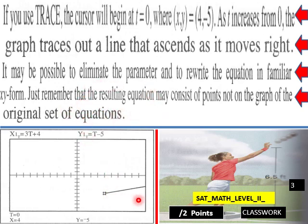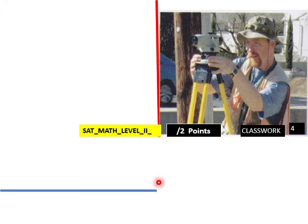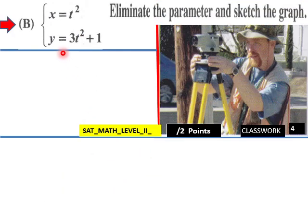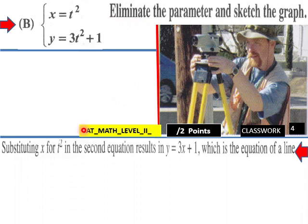Example B: we have X equals t squared and Y equals 3t squared plus 1. Eliminate the parameter and sketch the graph. Substituting X for t squared in the second equation results in Y equals 3X plus 1.